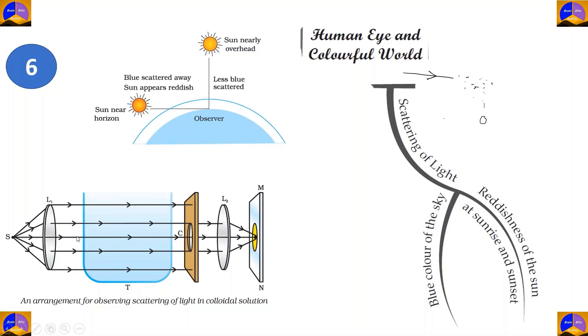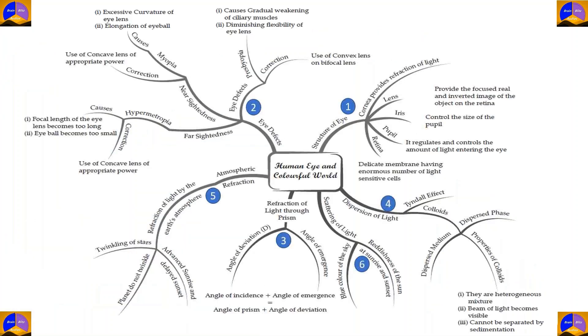This diagram here shows the scattering of light. When a light source is shined through a colloid, particles scatter the light. The white light scattered shows blue color in the colloid solution. And the light with longer wavelengths, such as yellow, orange and red, appears on the screen. And that's all you need to know about human eye and colourful world.